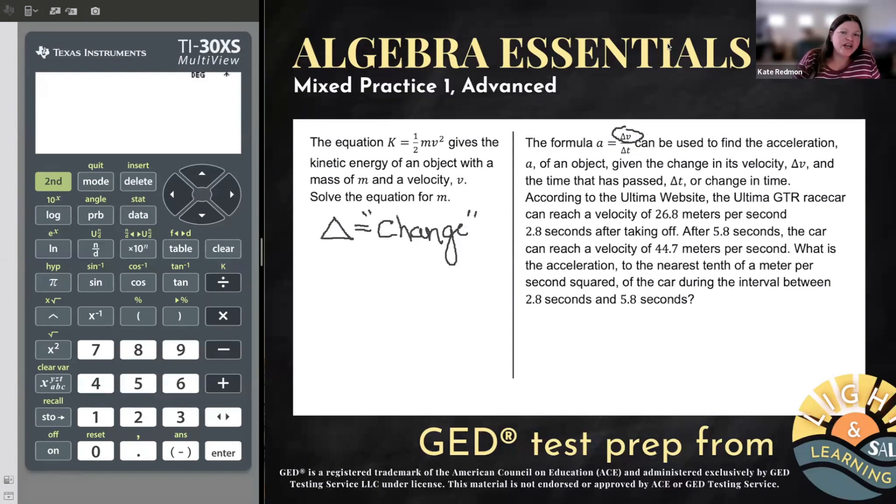Knowing that, let's read this again. The formula A equals change of V over change of T can be used to find the acceleration A of an object, given the change in its velocity, change of V, and the time that has passed, change in T, also known as change in time. According to the Ultima website, the Ultima GTR race car can reach a velocity of 26.8 meters per second, 2.8 seconds after taking off. So that just fun fact is 60 miles an hour. After 5.8 seconds, the car can reach a velocity of 44.7 meters per second, which is about a hundred miles an hour. What is the acceleration to the nearest 10th of a meter per second squared of the car during the interval between 2.8 seconds and 5.8 seconds? So it looks complex, but they did give us a formula. So let's start by just copying that down.